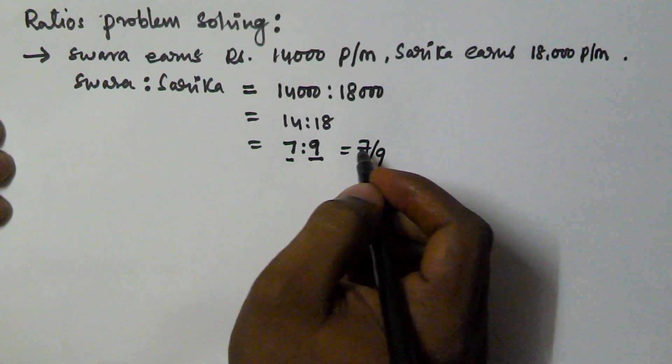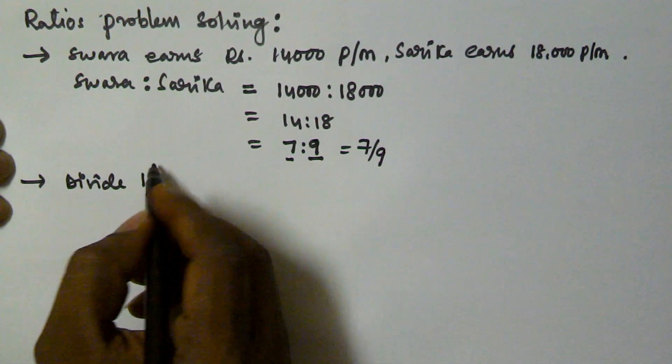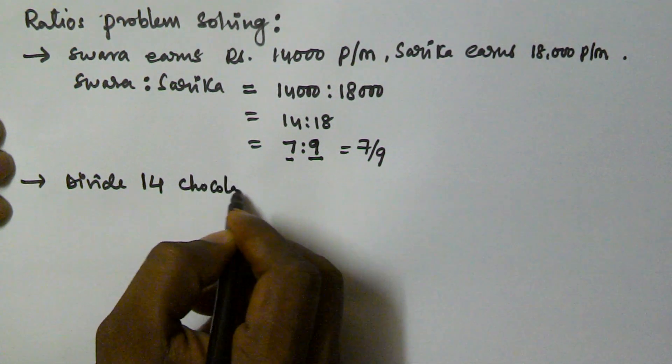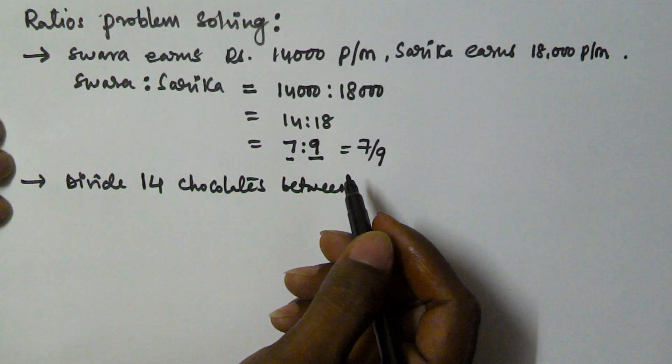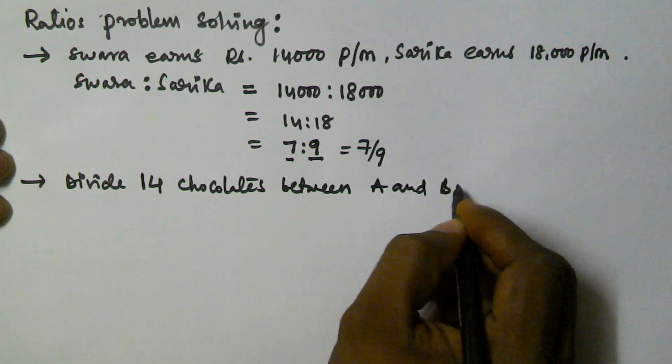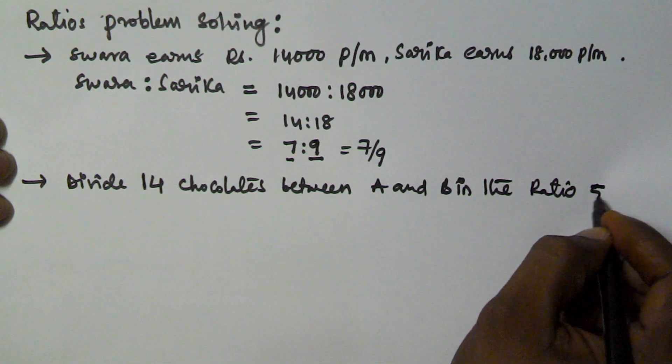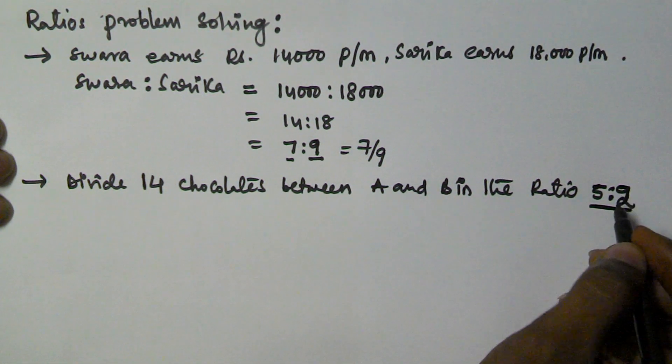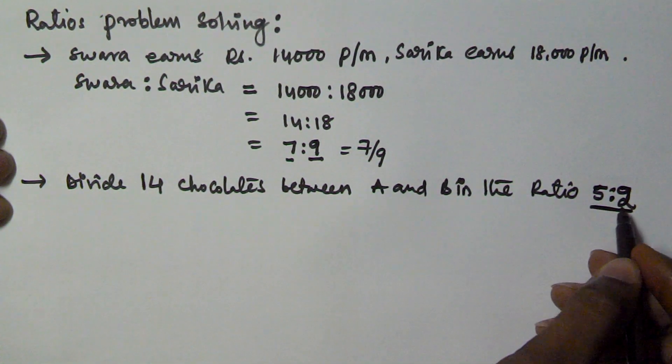So let us see another example. Divide 14 chocolates between A and B in the ratio 5 is to 2.